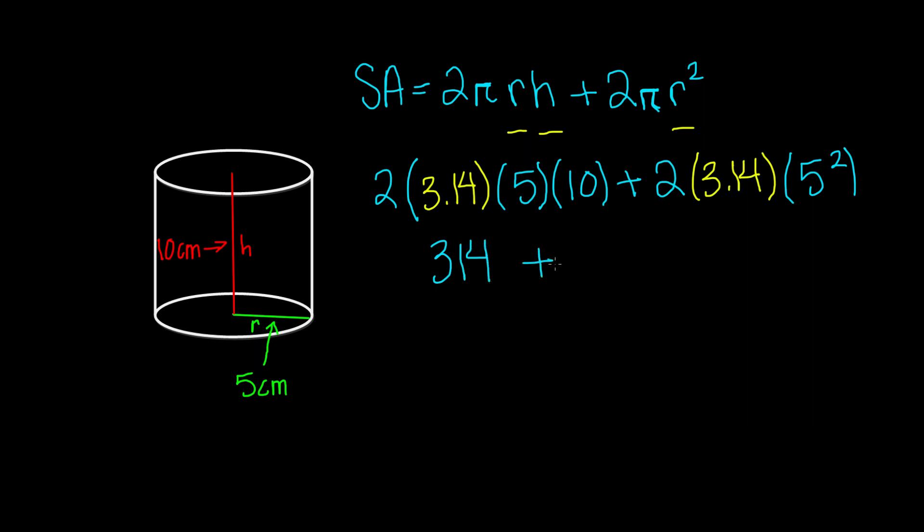When we multiply 2 times 3.14 times 5 squared, or 25, because 5 squared is 25, we get 157. Now I'll add 314 plus 157, and I got 471 centimeters squared.